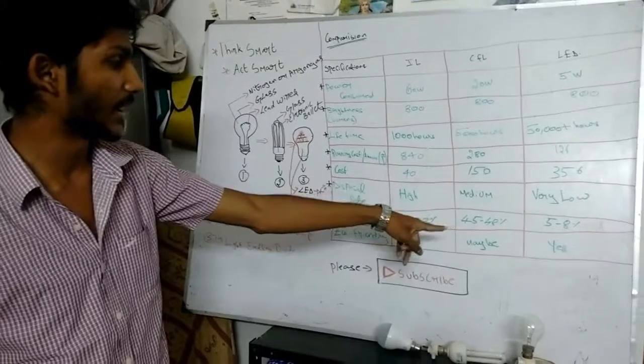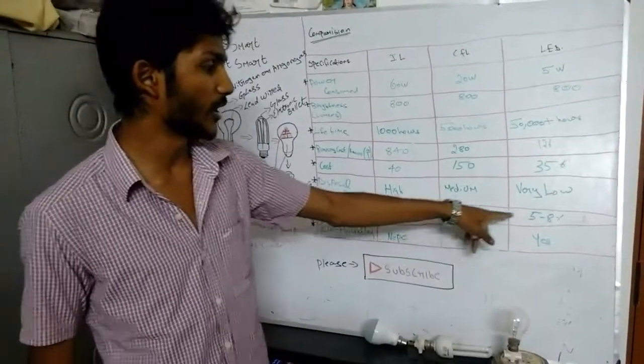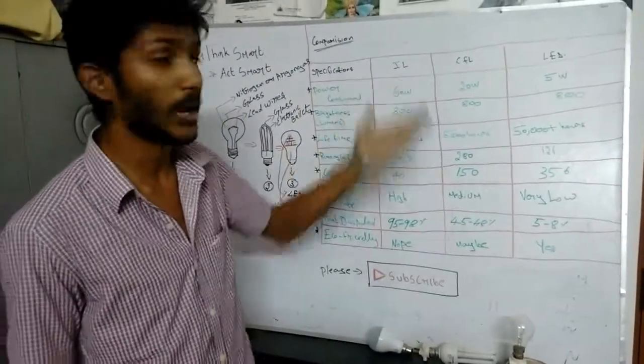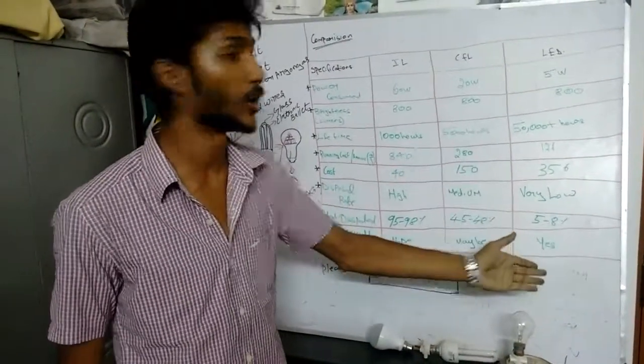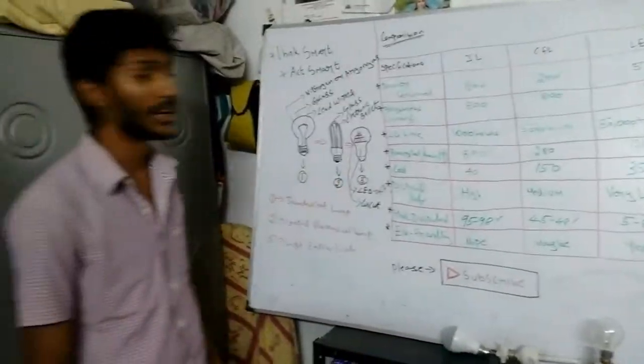Heat dissipated as I said: 95 to 98, 45 to 48, 5 to 8. Eco-friendly: It is not eco-friendly. It may be eco-friendly. It is very definitely eco-friendly. These are the construction of these three lamps.